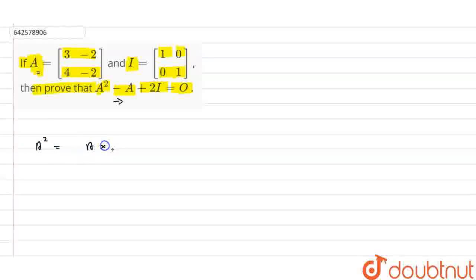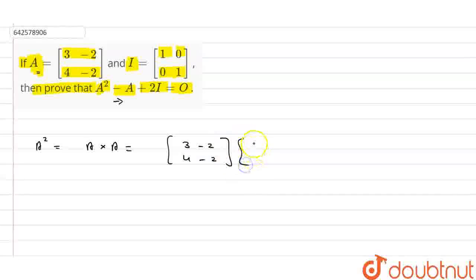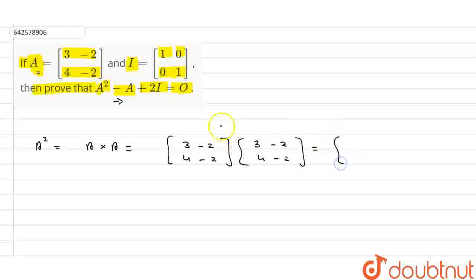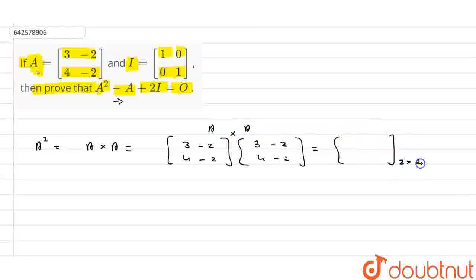A squared equals A into A, and matrix A is nothing but [[3, -2], [4, -2]]. Again, the value of A is [[3, -2], [4, -2]]. So A squared is the multiplication of these two matrices, giving us a 2×2 matrix.